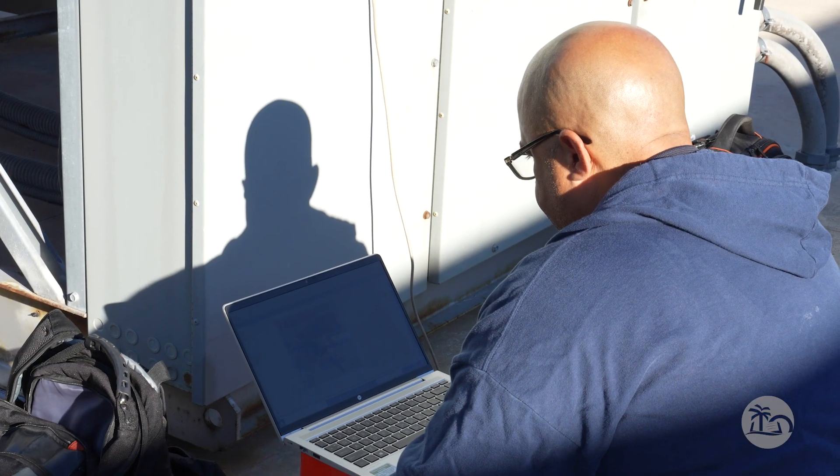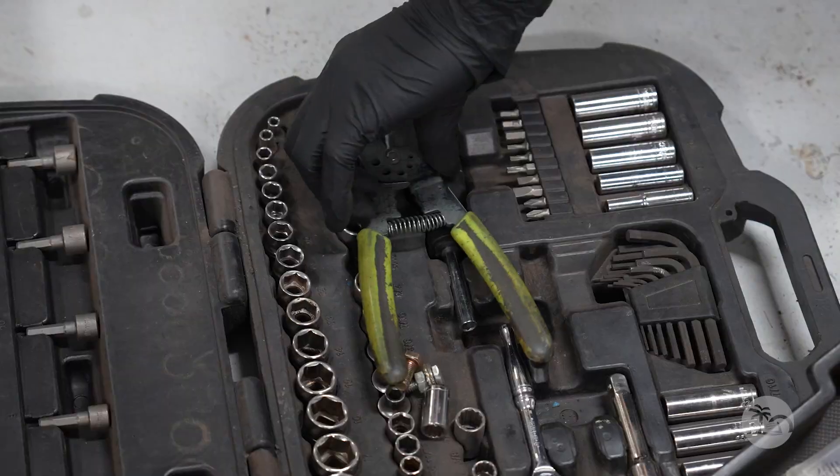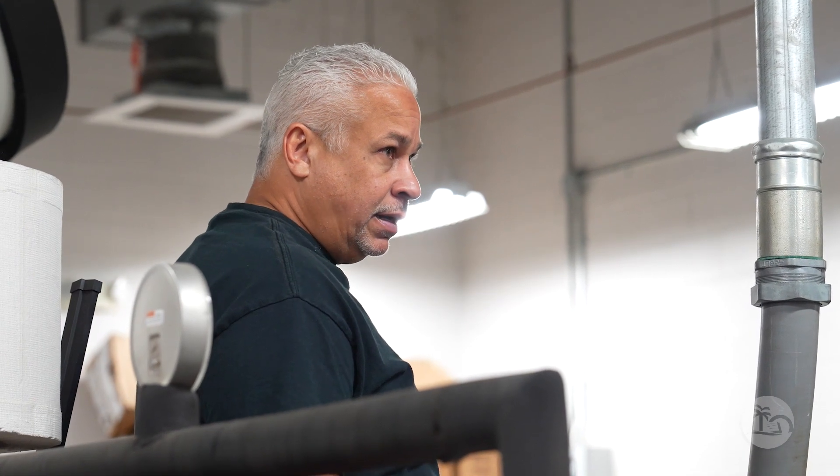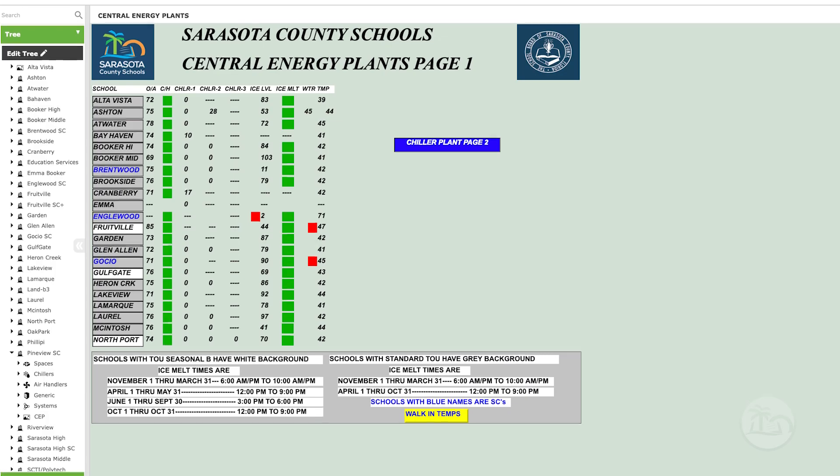When a problem arises at a chiller plant it's able to be assessed and taken care of all within one location. In fact the technicians are usually able to view the issue through the building automation system before even arriving on site.